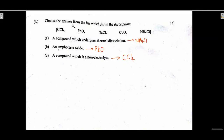Last question: choose from the list. The compound that undergoes thermal dissociation (reversible thermal decomposition) is ammonium chloride. The amphoteric oxide is lead oxide — copper oxide is not amphoteric, it is basic. A compound that is a non-electrolyte is CCl4 — it is a non-polar covalent compound and cannot be an electrolyte. This completes the 2023 question paper — hope you have done well. Take care, bye.